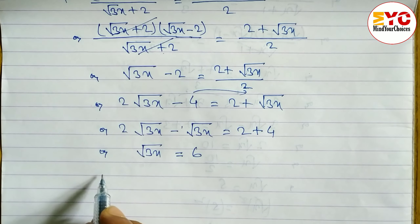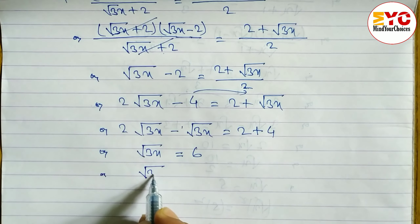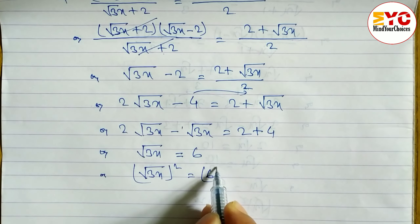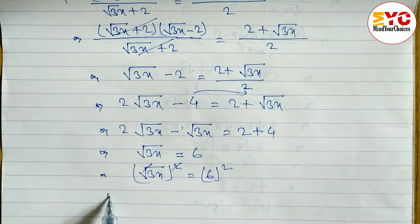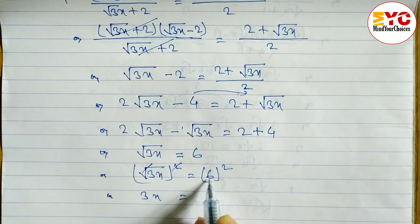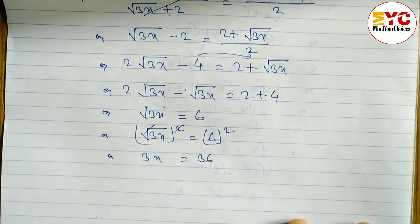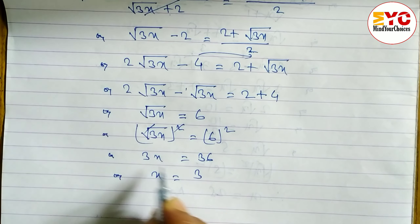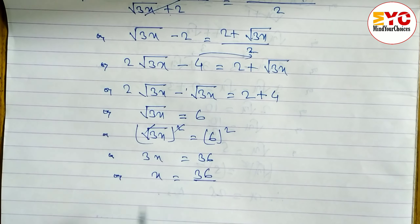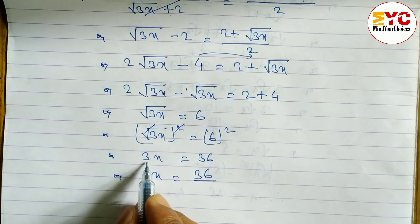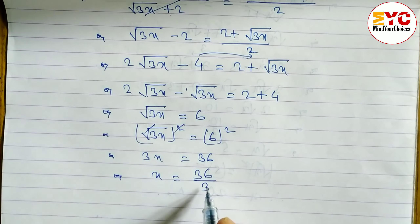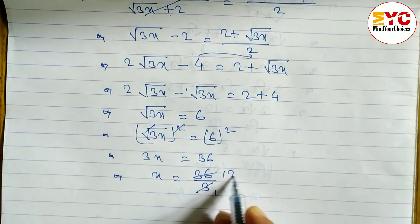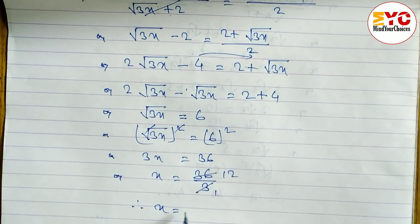We have √(3x) = 6, so we square both sides. (√(3x))² = 6², and square and root cancel, leaving 3x = 36. Since 3 is in multiplication, we divide: x = 36 ÷ 3 = 12. So the value of x is 12.